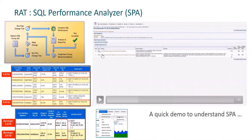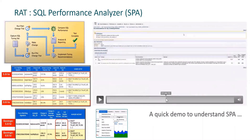Before implementing either of the two solutions, for example we're not sure if the SQL profile will give us any benefit, so it's risky to implement directly. We'll go and validate with the SPA. Clicking that option takes you to another page, and you can see the message: 'Successfully submitted your validation SQL profile using SPA.'